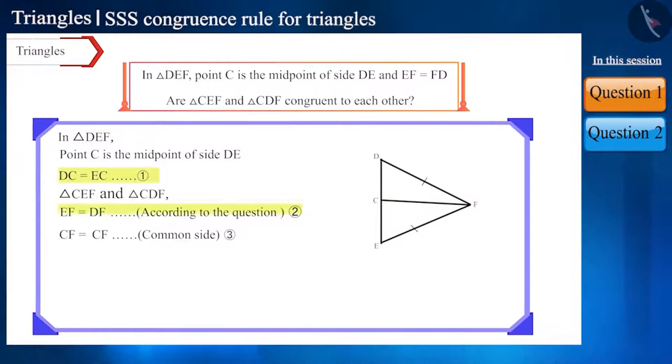By looking at equations 1, 2 and 3, we can say that according to the side-side-side criterion or the SSS congruence rule, these two triangles are congruent because all three sides of these two triangles are equal.